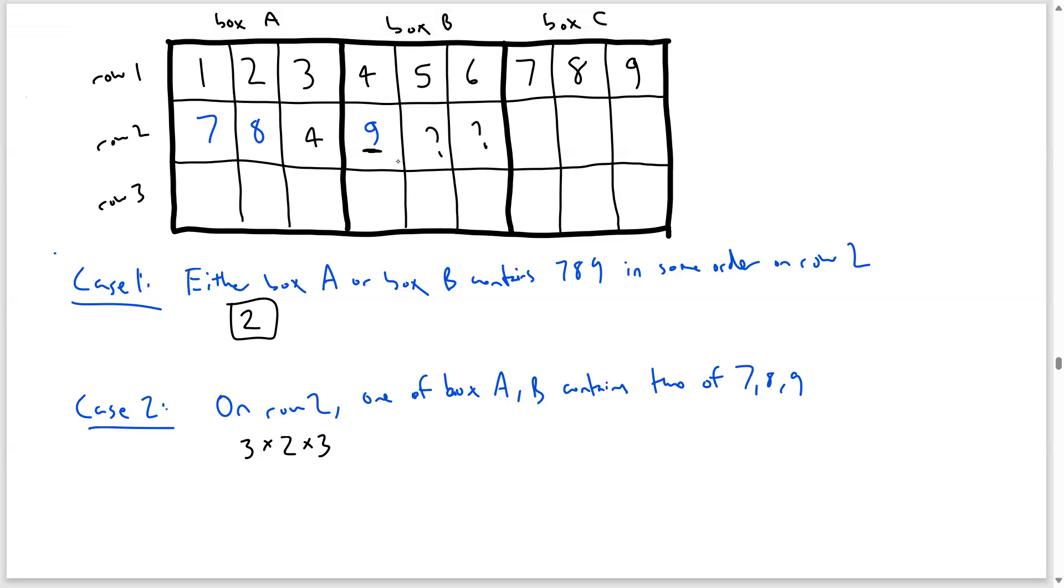Now, out of the two remaining numbers in either box A or box B, these two numbers with the question mark, they have to be chosen out of 1, 2, 3. In this example, I have to choose two of them. And so the number of ways to do that is going to be 3 choose 2, which is 3. Let's say those numbers were 1 and 2.